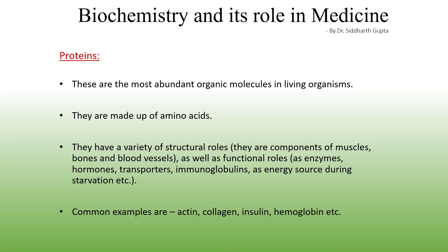Proteins are very versatile biomolecules with both structural and functional roles — they are core components in skin, muscles, bones, and hair, and also function as enzymes, hormones, and transporters. Actin, collagen, insulin, and hemoglobin are some common proteins found in the body. Actin and collagen are both structural proteins, found in muscles and cartilage respectively. Insulin is involved in controlling blood glucose levels, and hemoglobin is responsible for transporting oxygen through blood.